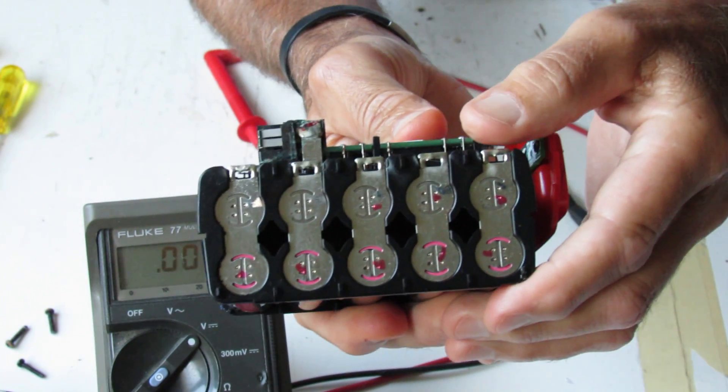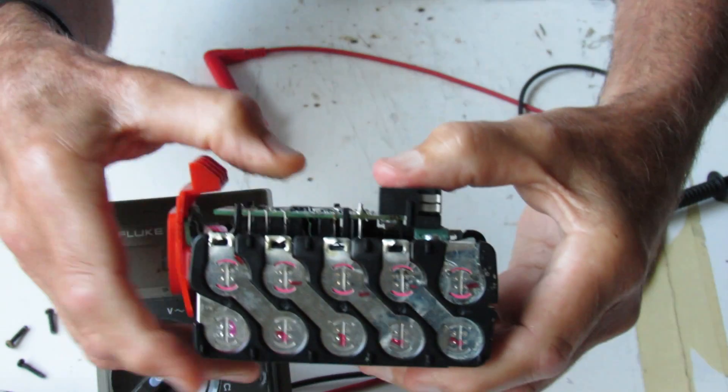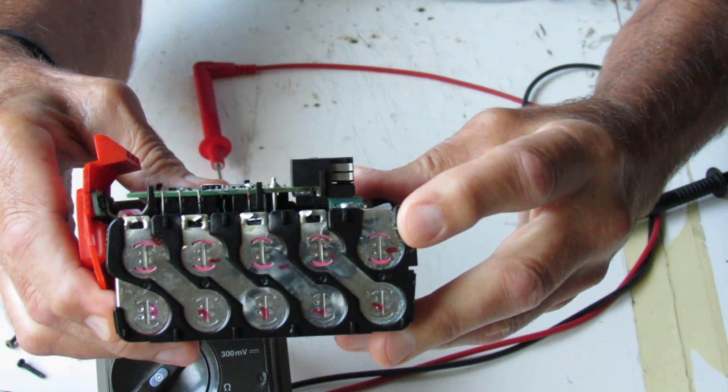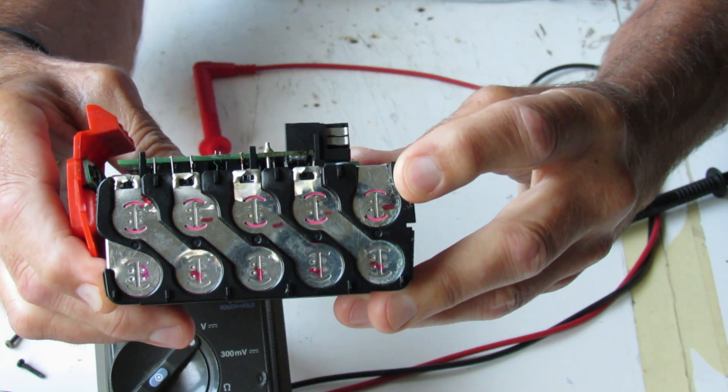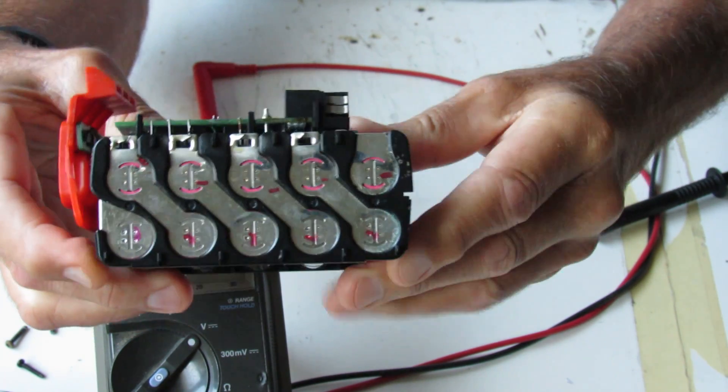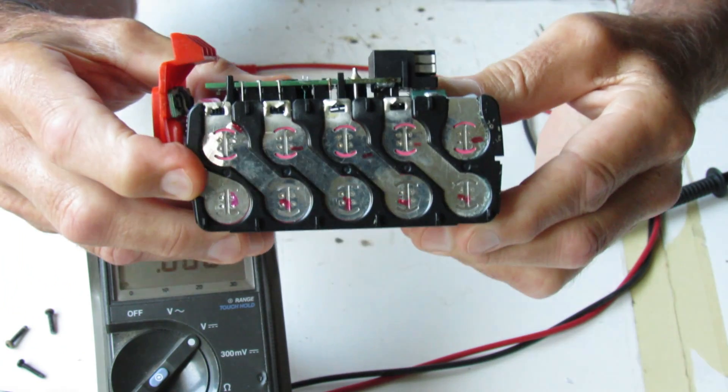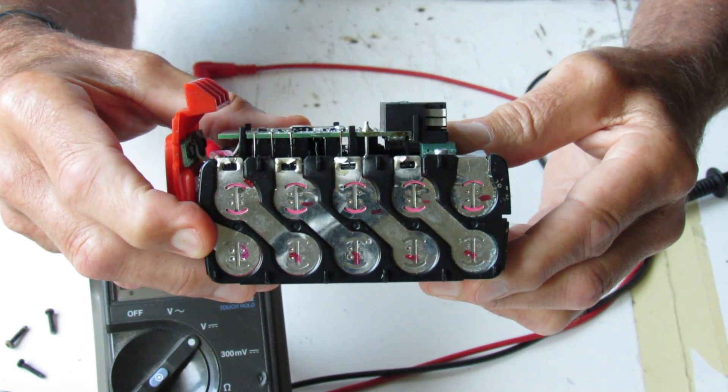These are your series connections for your cells. Right there where I have my finger is the plus terminal. And then your 10 cells in series come out to your minus terminal right there.